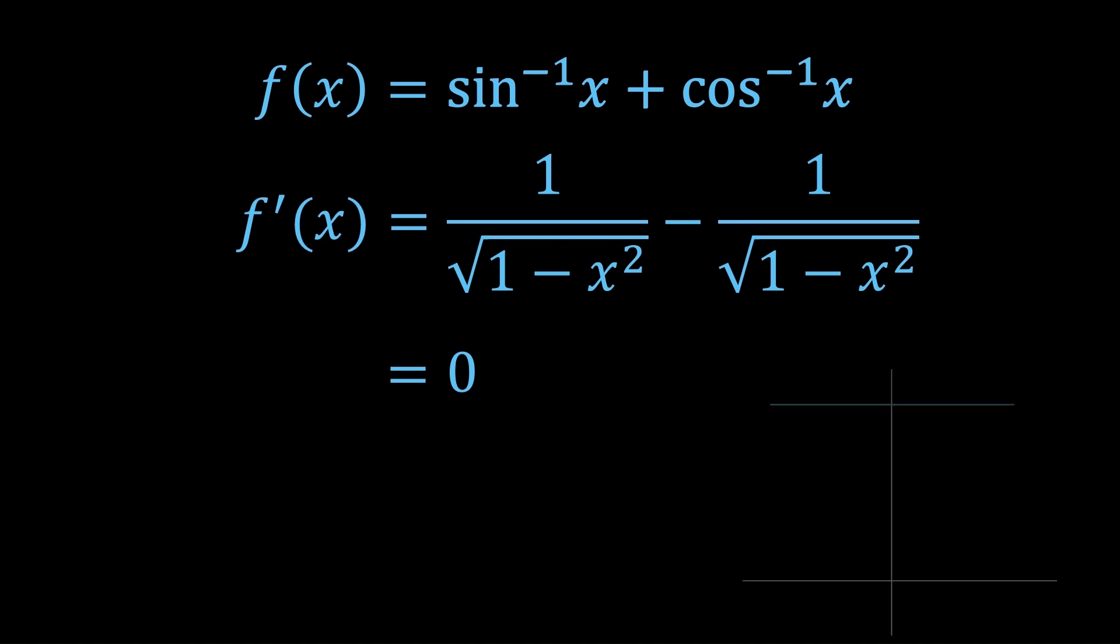So all we need to do to find out what this function actually is, is sub in a point. And for example, if we sub in x equals 0, we get π on 2. So the function is π on 2 at x equals 0, and since it's never changing, it's actually π on 2 everywhere, at least in its domain.